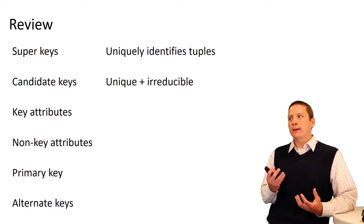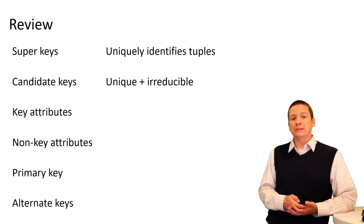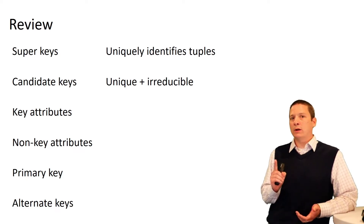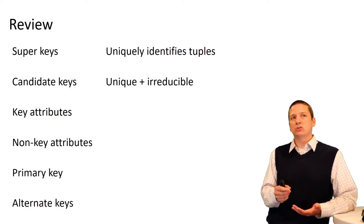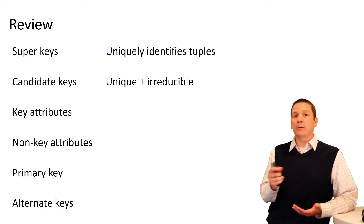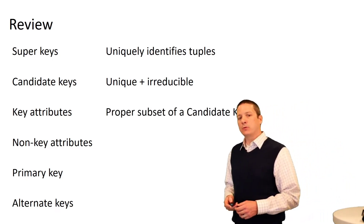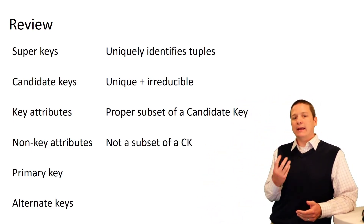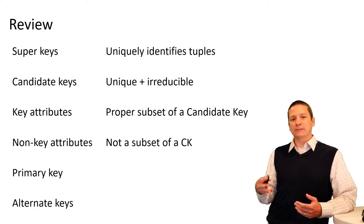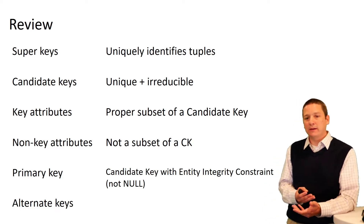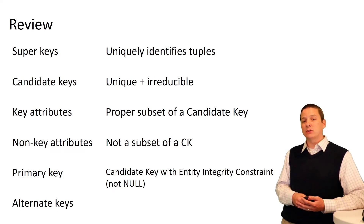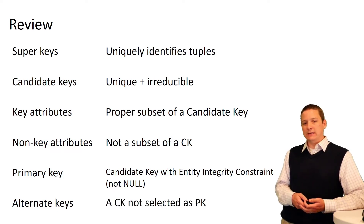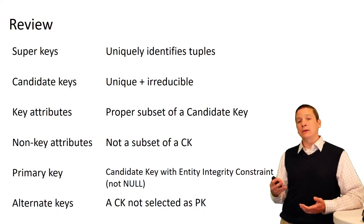We'll typically have a much smaller number of candidate keys in a relation. Candidate keys are what we use to uniquely identify tuples. We select just one candidate key to be our primary key, and to designate it as such, we add the constraint that it cannot have any null values — this is the entity integrity constraint. A key attribute is a proper subset of a candidate key — the constituent attributes that make up a candidate key. A non-key attribute is any attribute that is not a subset of a candidate key. Alternate keys are any candidate keys we did not select as the primary key.